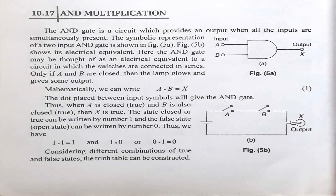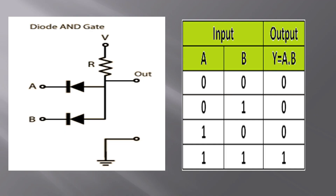Now I will explain the truth table. The value of 1 represents high and the value of 0 represents low.